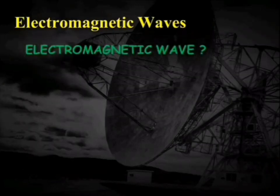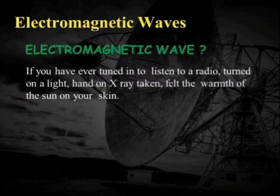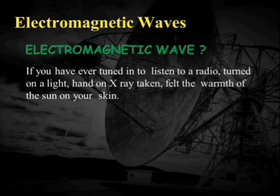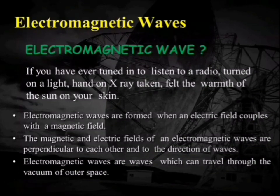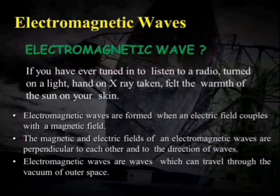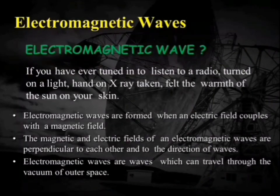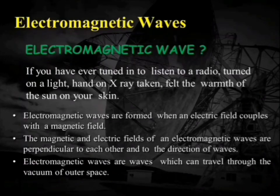What is an electromagnetic wave? Have you ever encountered one? The answer is yes. If you've ever turned on a radio, turned on the lights, had an X-ray, or felt the warmth of the Sun on your skin, that is an electromagnetic wave. It is a combination of an electric field and a magnetic field that are perpendicular to each other and to the direction of propagation. These waves do not require any medium — they can travel through vacuum or outer space.